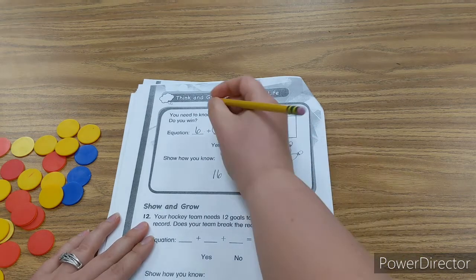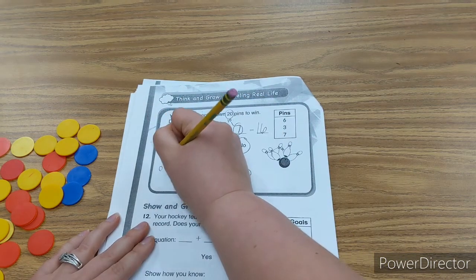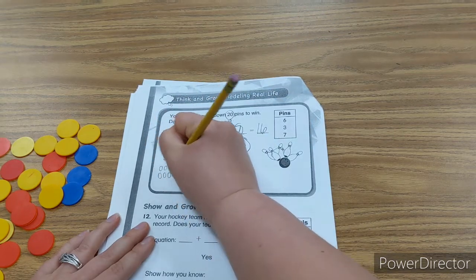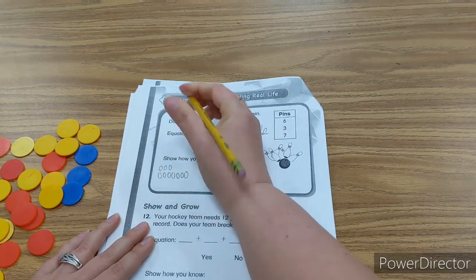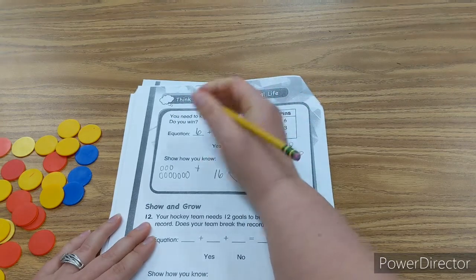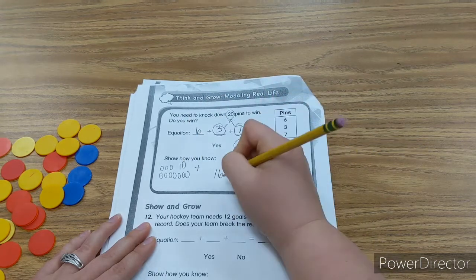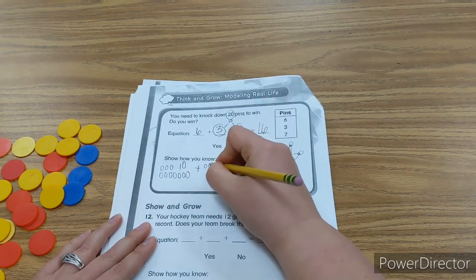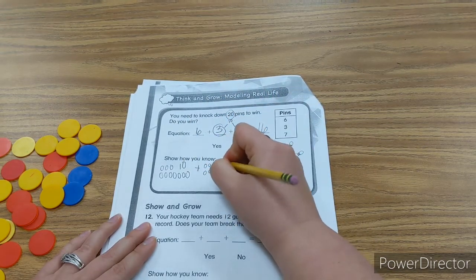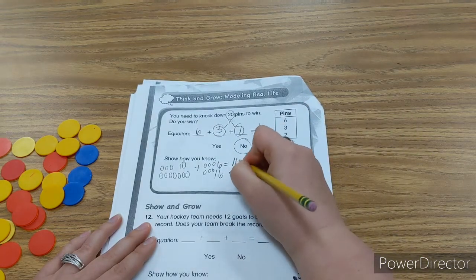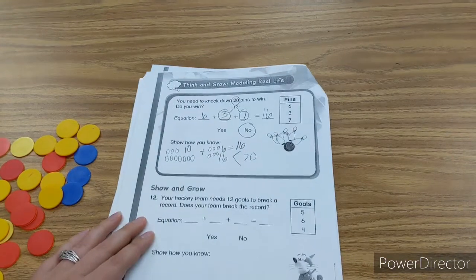We could also draw it. So, 1, 2, 3, and 7. 1, 2, 3, 4, 5, 6, 7. Plus... So that's 1, 2, 3, 4, 5, 6, 7, 8, 9, 10. That's 10. Plus 6 more. 1, 2, 3, 4, 5, 6. That's 6. And 10 plus 6 equals 16.